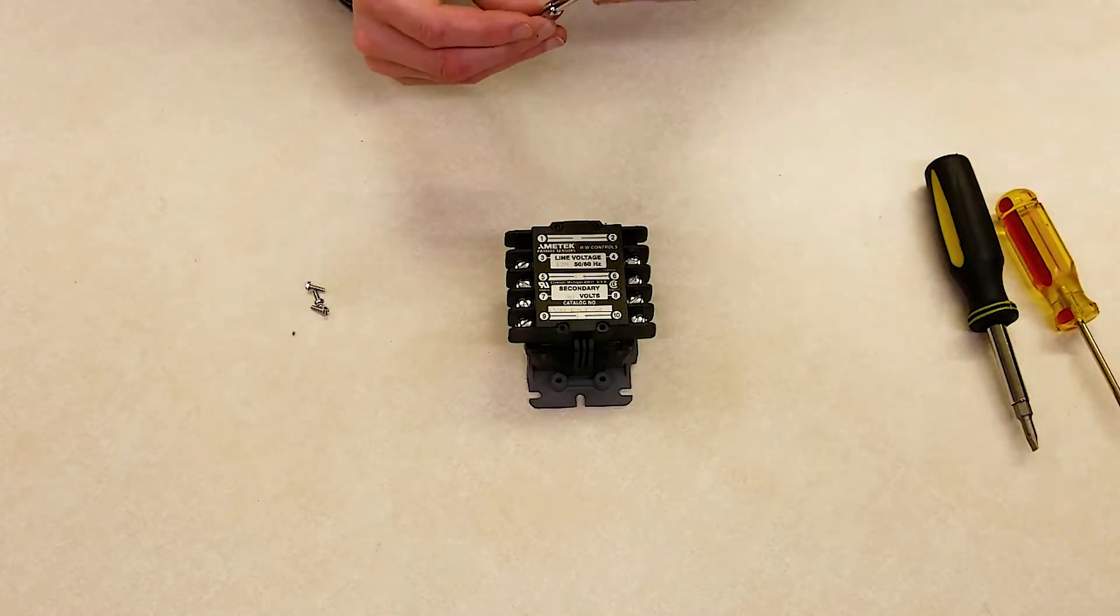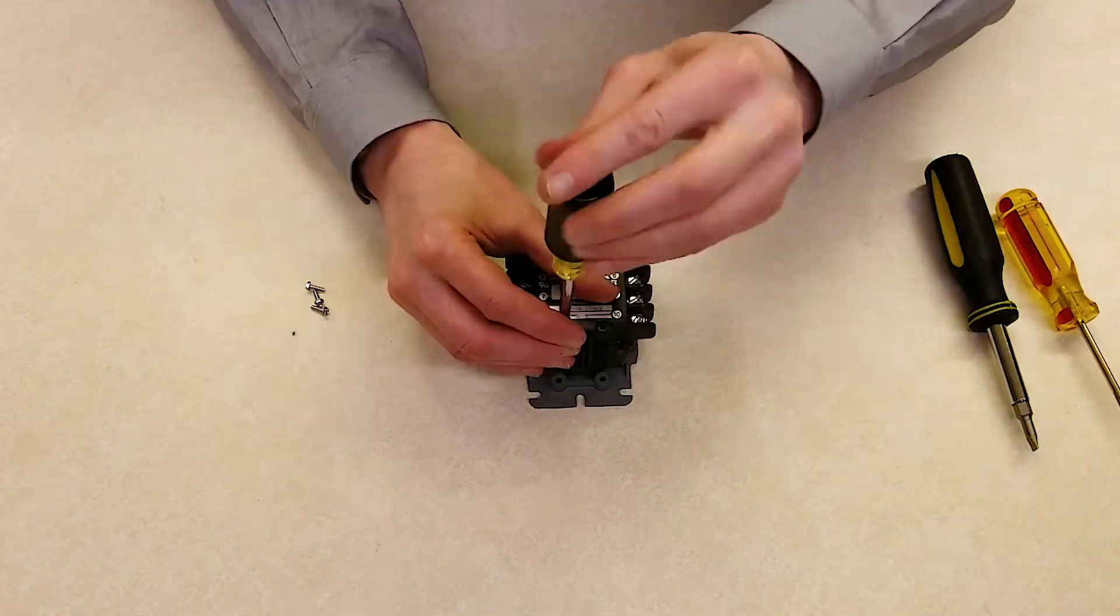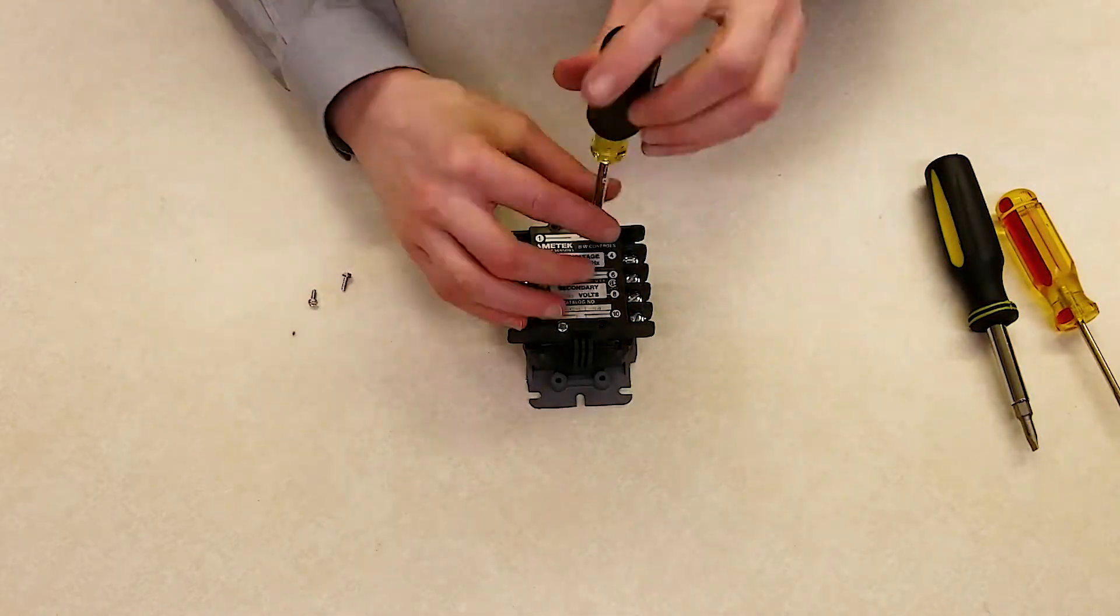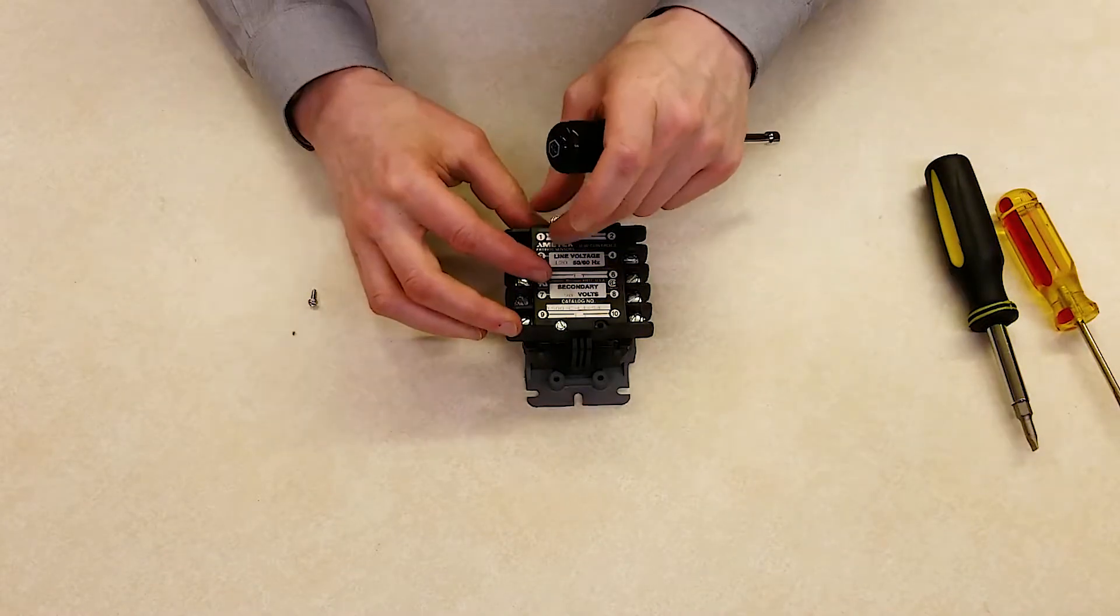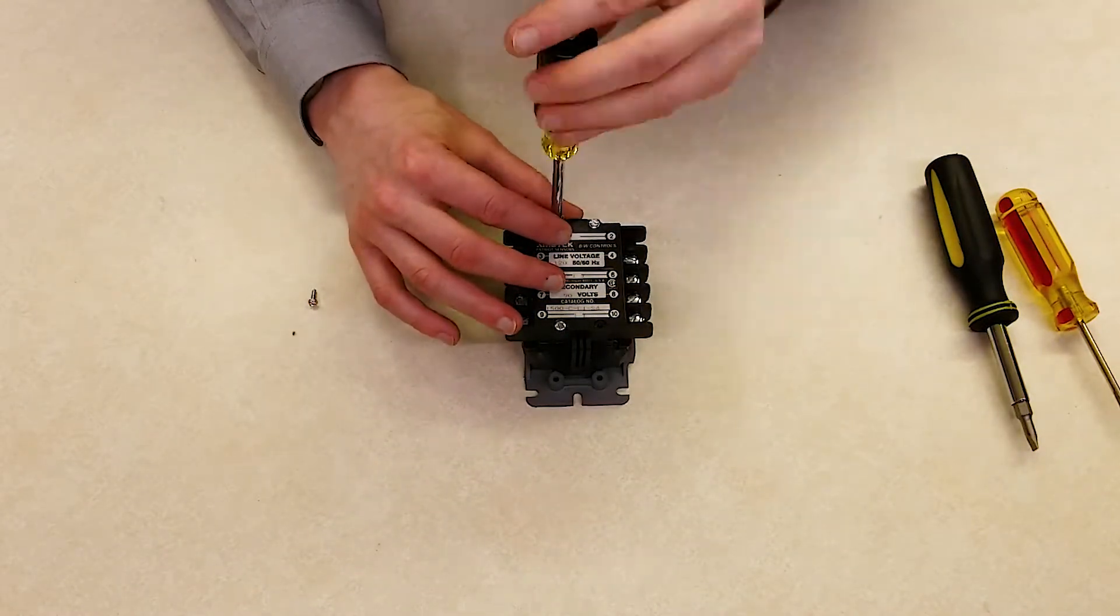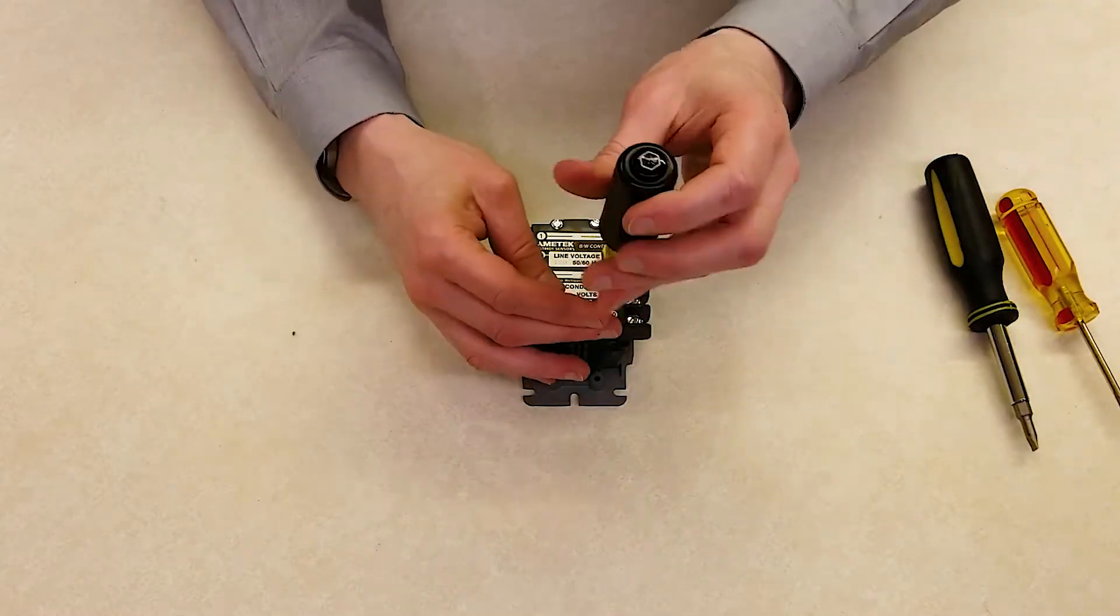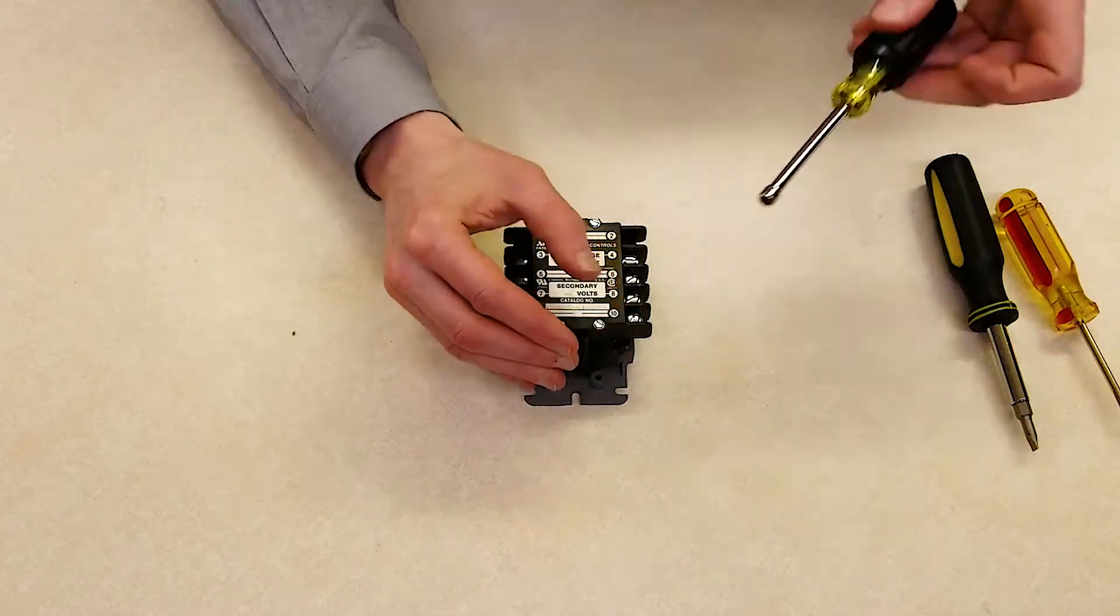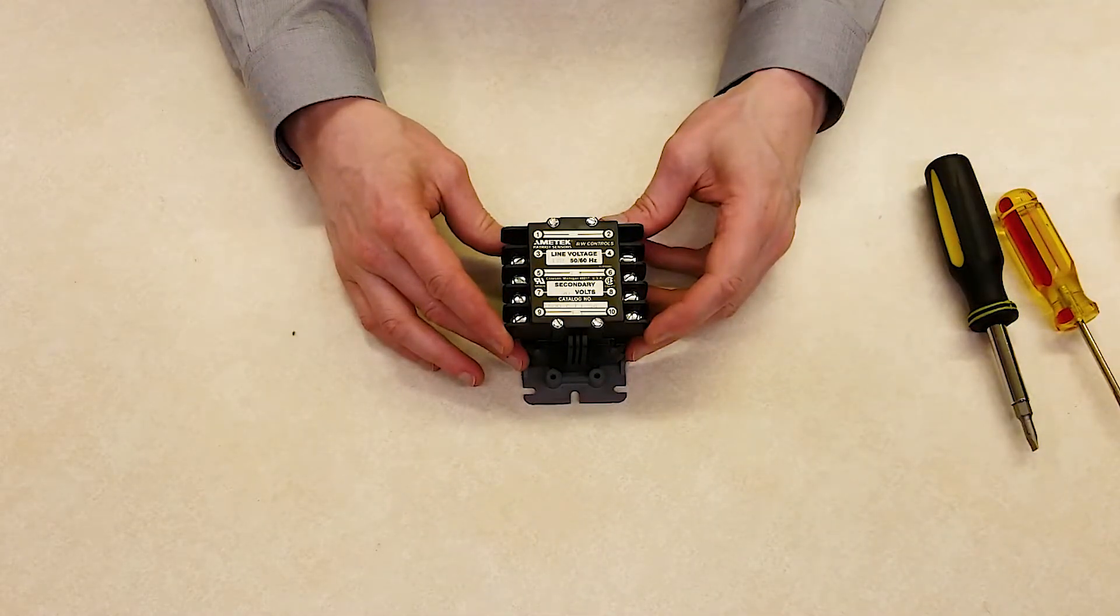Now, I just need to replace the cover screws. And now our relay is set up with a normally closed contact.